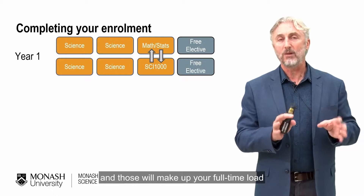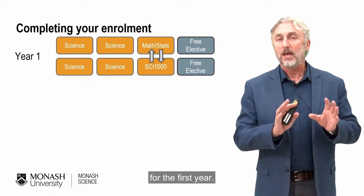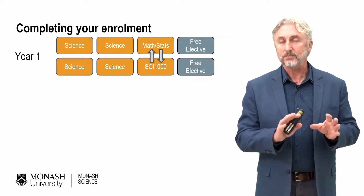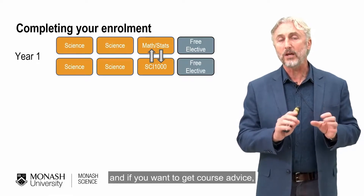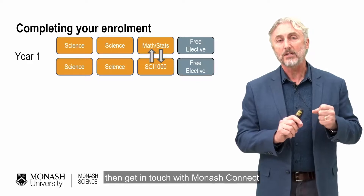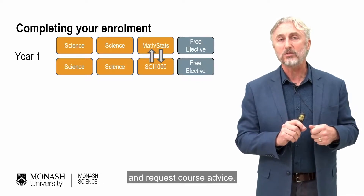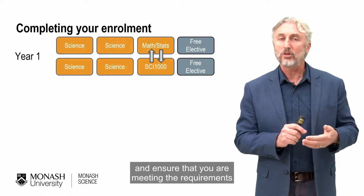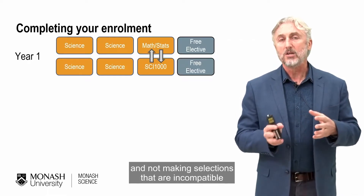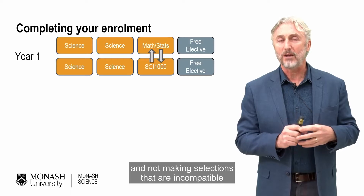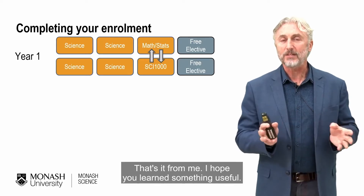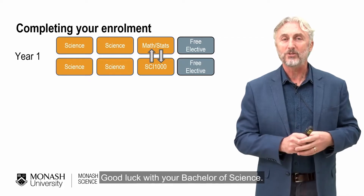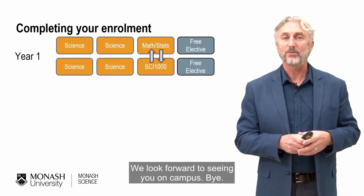If you're ever unsure what to do, look at the handbook. If you want course advice, get in touch with Monash Connect and request course advice — they will review your course selections and ensure you are meeting the requirements and not making selections incompatible with the Bachelor of Science. Good luck with your Bachelor of Science. We look forward to seeing you on campus.